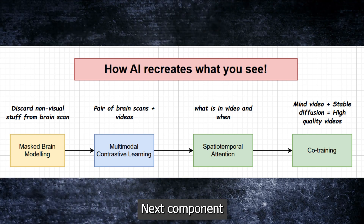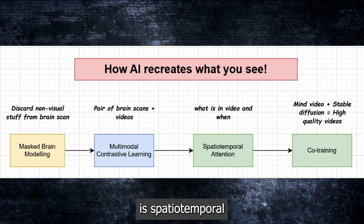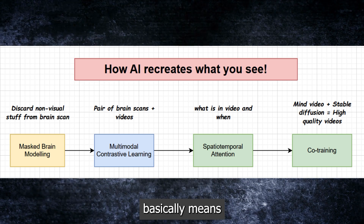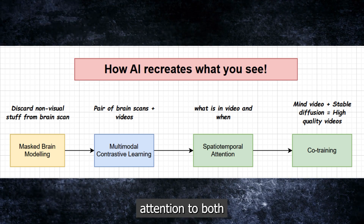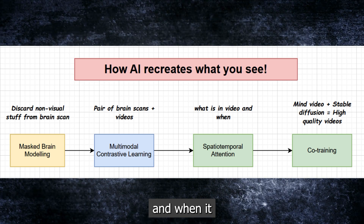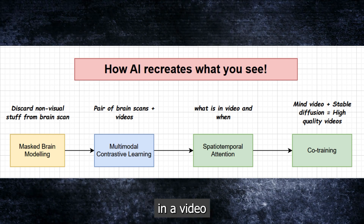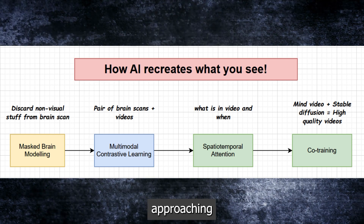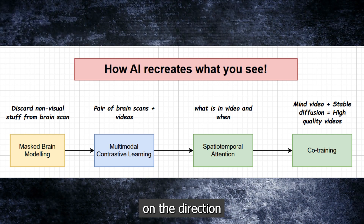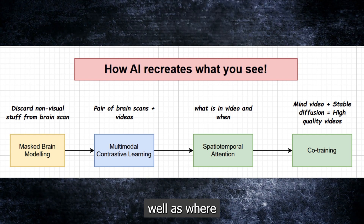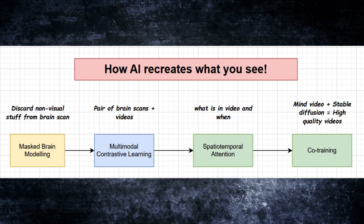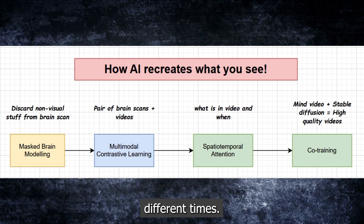The next component is spatiotemporal attention. This basically means the model pays attention to both what is happening in the video and when it is happening. For example, in a video of a ball approaching the camera, the model focuses on the direction of the ball as well as where it is at different points in time.